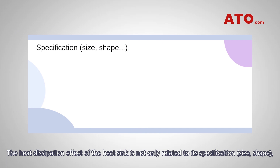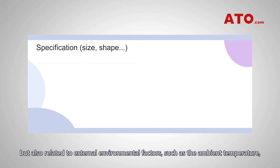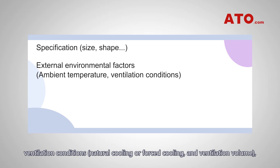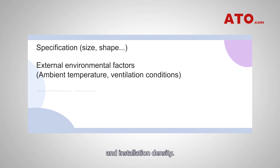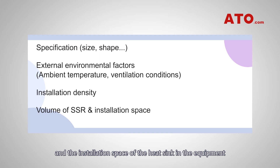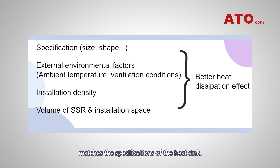The heat dissipation effect of the heat sink is not only related to its specifications like size and shape, but also related to external environmental factors such as the ambient temperature, ventilation conditions including natural cooling or forced cooling and ventilation volume, and installation density. In addition, it is also necessary to consider whether the volume of the solid-state relay and the installation space of the heat sink in the equipment matches the specifications of the heat sink.